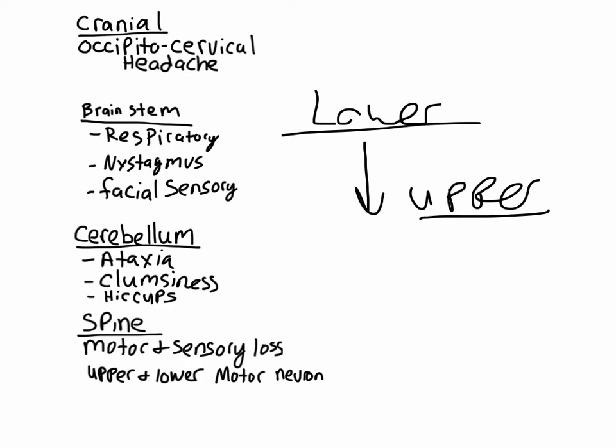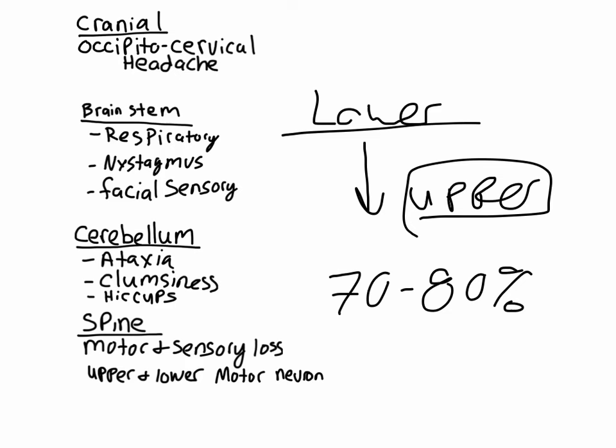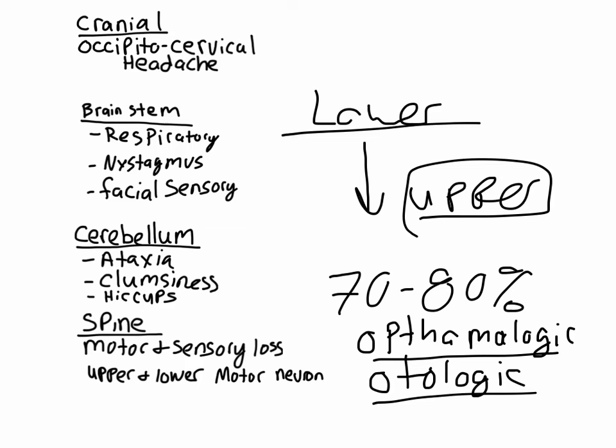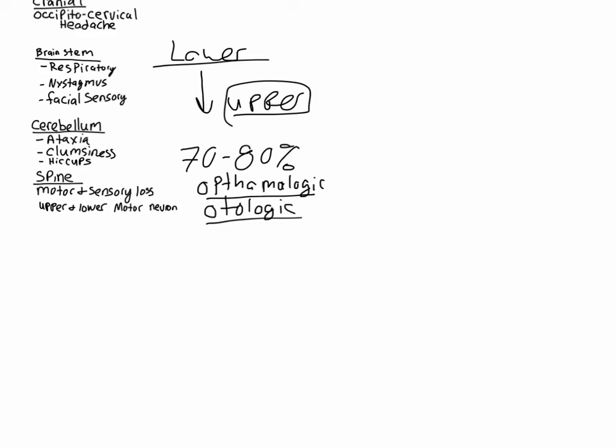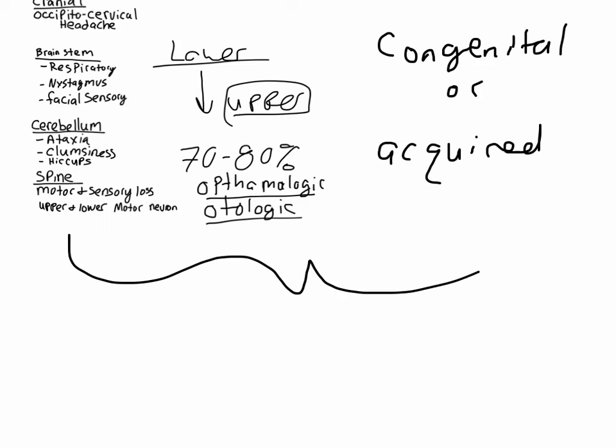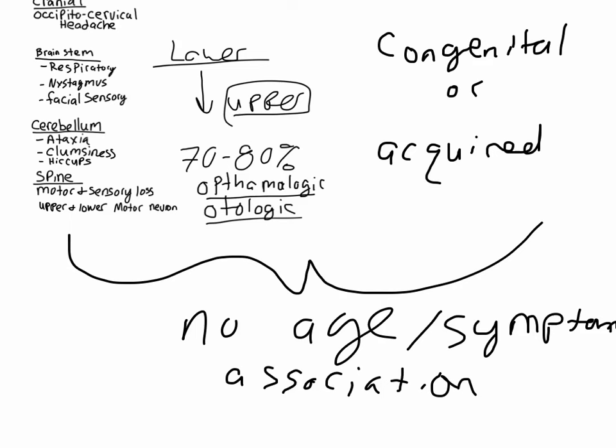About 70 to 80% of people at diagnosis will have either ophthalmologic or otologic problems. It's important to note that Chiari type 2 is almost always congenital, whereas type 1 can be either congenital or acquired. Unlike type 2, there is no association between age and symptoms in type 1. However, in infants, you may notice poor feeding, poor suckling, and dysphagia as presenting symptoms — though not at any different rate than what you'd see with someone who develops this at, say, age 50.